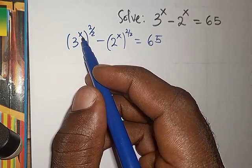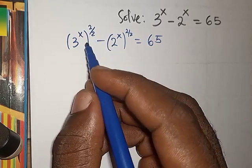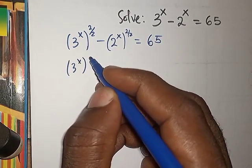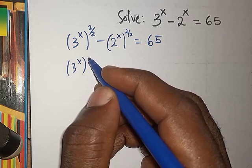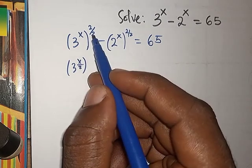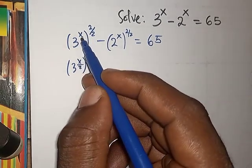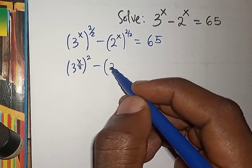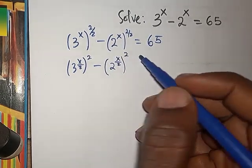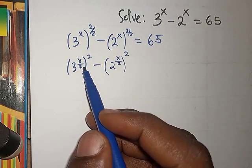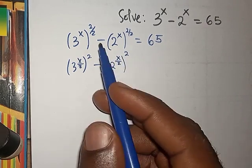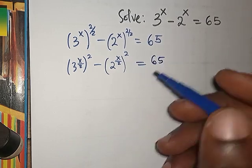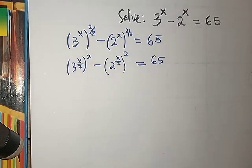What we do is rewrite each term by splitting the exponent: 3^x becomes (3^(x/2))^2 and 2^x becomes (2^(x/2))^2. This way we can extract perfect squares from each term, setting up the difference of two squares factoring. So the equation becomes A^2 minus B^2 equals 65.